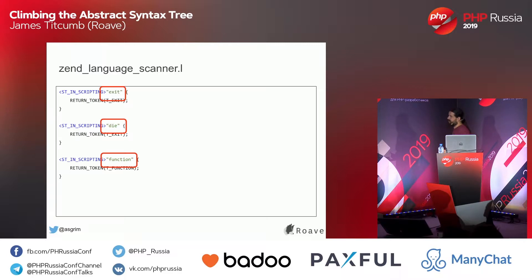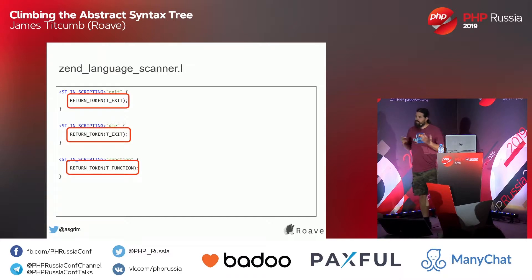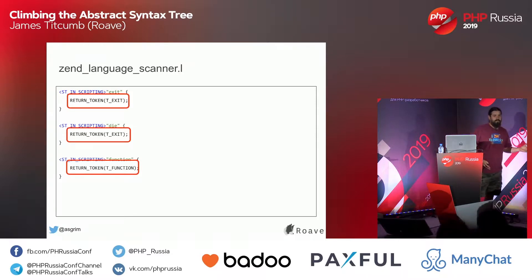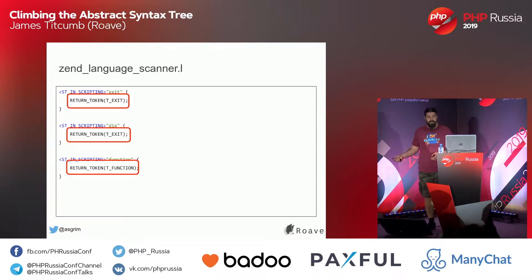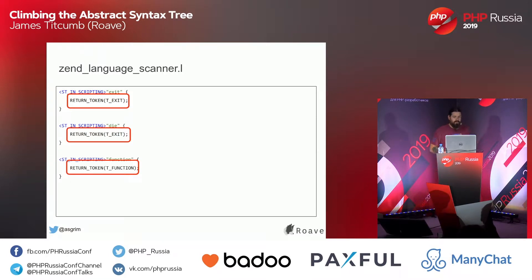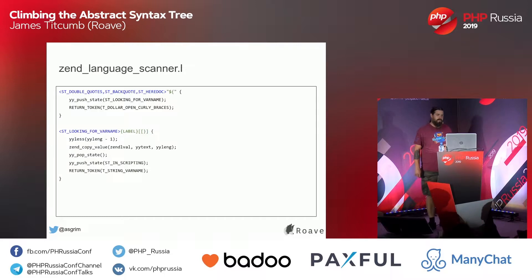The next part is the token itself — just basic strings in these cases. Exit, die, and function. Inside the curly braces is what actually happens when the lexer encounters these tokens. When we see the word 'die' and we're in the scripting state, we're going to return a token called T_EXIT. All the tokens are defined as constants like T_underscore_whatever the name of the token is. When we return the token, we're saying output this token to the token stream, which is given to the next part of the process.